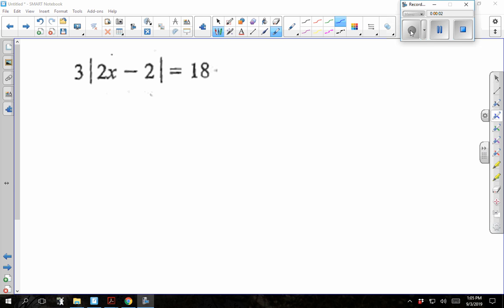We want to solve the absolute value equation, but before we do that, we've got to isolate it. We've got to get it by itself, so we want to divide by 3. Please don't distribute through the absolute value.